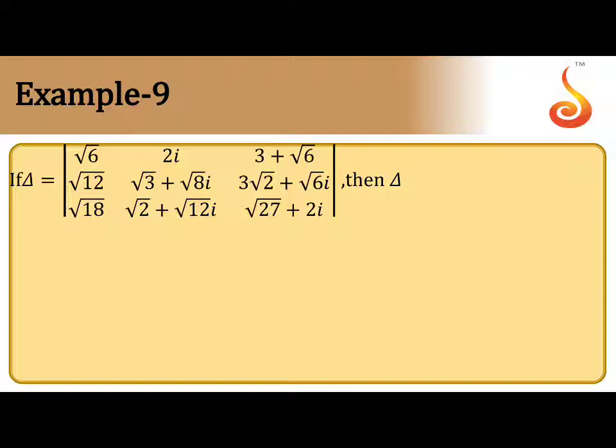First take out common √6 from C1. If you take √6 common from C1, the left out part is 1, √2, √3.